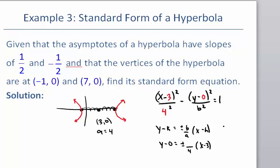We know that this slope is going to equal 1/2 and negative 1/2. So the value b over a needs to simplify to positive 1/2 and negative 1/2. What number has to go on top of that fraction? We need a 2 on top so that when it simplifies it gives the slope of 1/2 and negative 1/2 that the problem referenced. So the b value is going to equal 2, and I can plug that in.